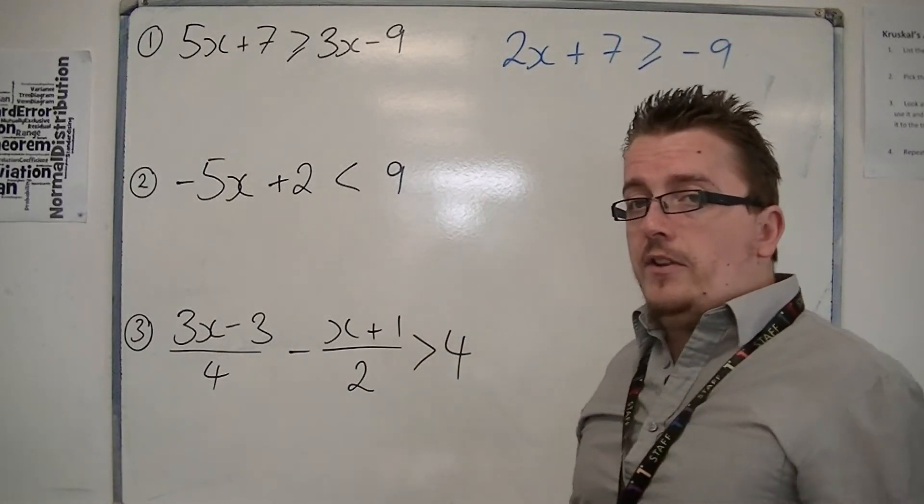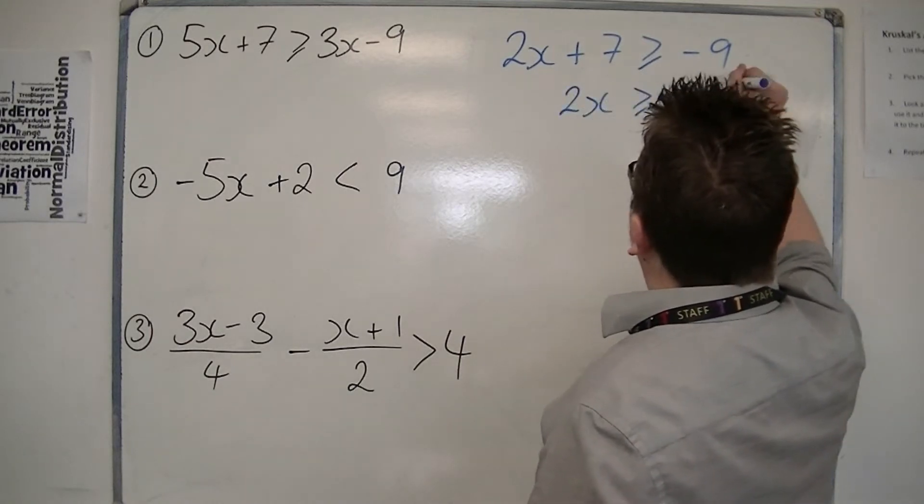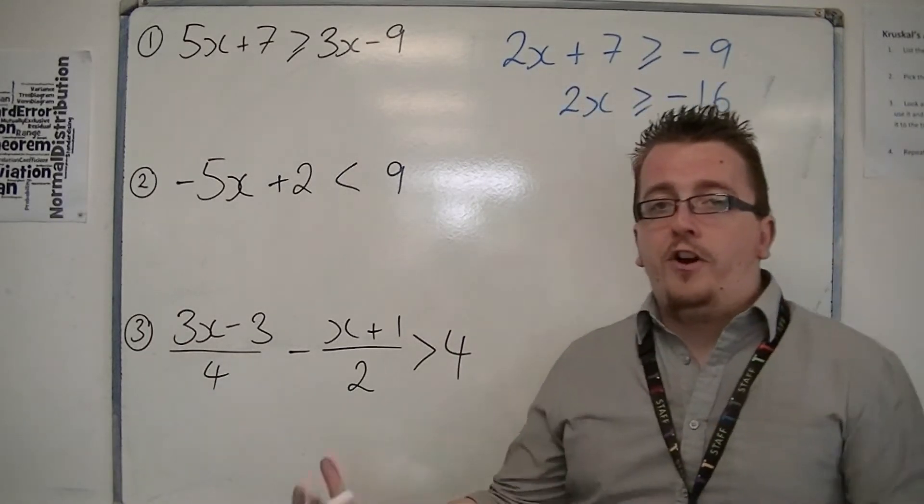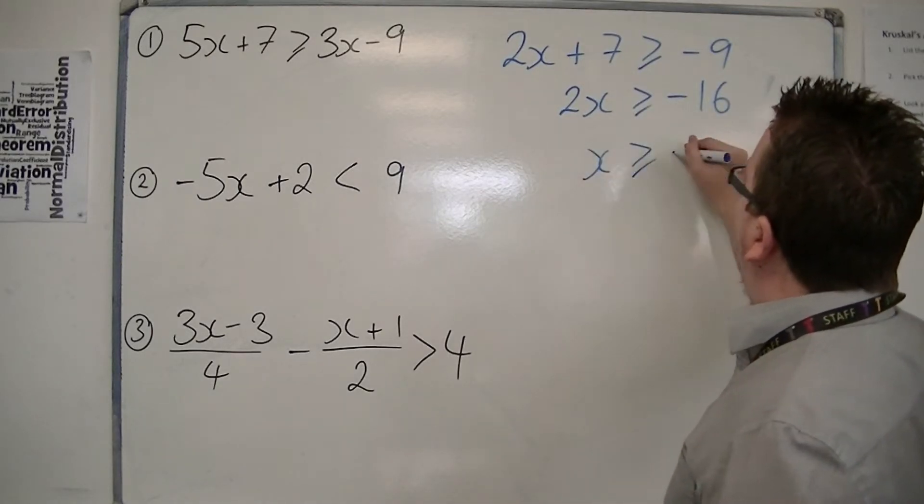Then take 7 from both sides, so we get 2x is greater than or equal to minus 16. Then divide both sides by 2, and we get x is greater than or equal to minus 8.